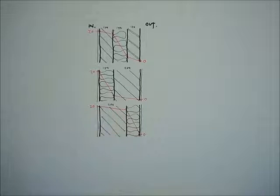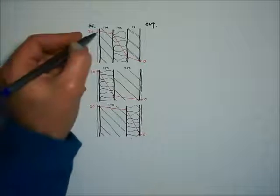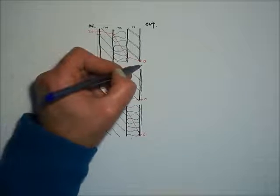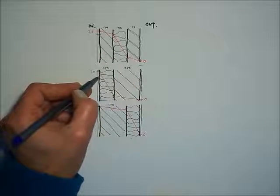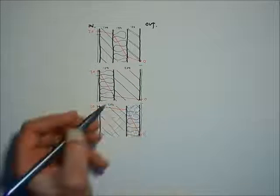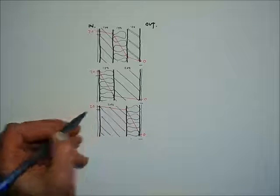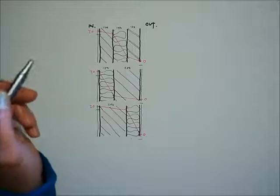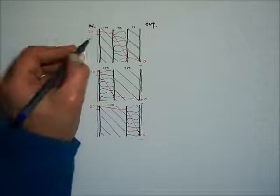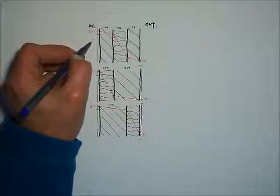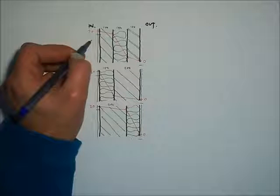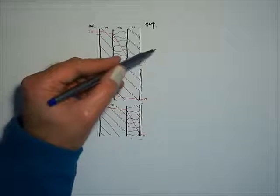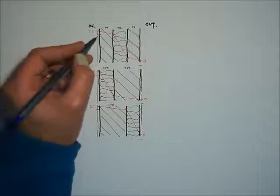Now I'm also going to draw a dew point gradient. And for this, I'm assuming that neither the inside nor the outside has got condensation visible in the air. Which means, if on the inside, this is a kitchen or a bathroom, no one's had a shower or boiled a kettle. And on the outside, there's no fog.